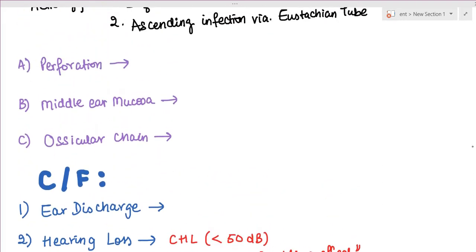In mucosal CSOM, the perforation is always central, but the size and position may differ. The middle ear mucosa may be normal when there is no infection or the infection is inactive.